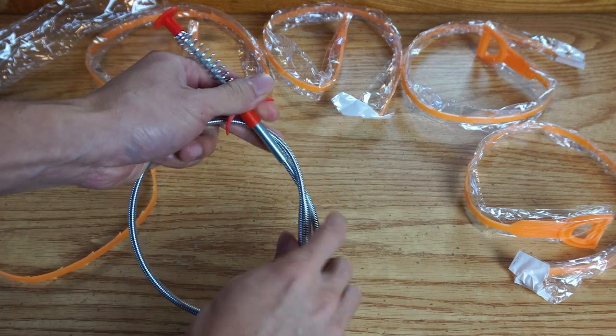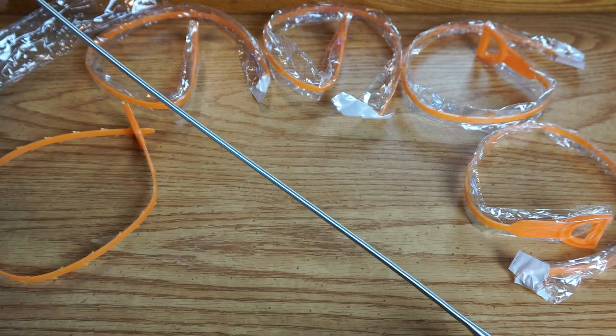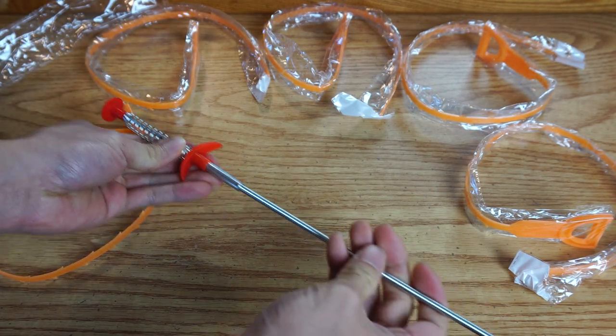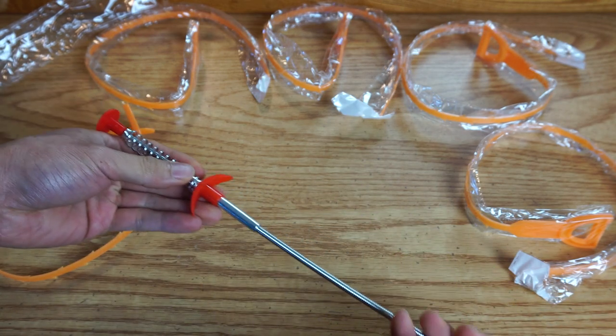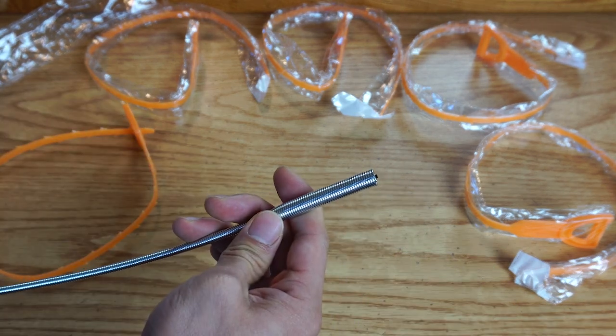For tougher clogs that might be a little deeper or that you can't catch using the plastic snake, try the metal snake which measures 24 inches with an insertable length of about 20 inches. The metal snake is a bit more durable,